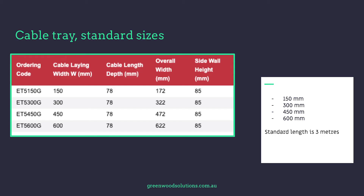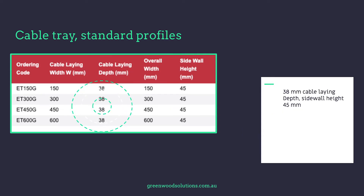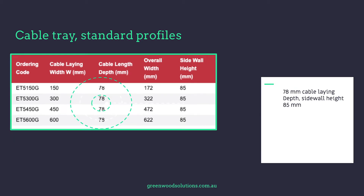Cable ladder, cable tray, and cable mesh come in standard widths: 150mm, 300mm, 450mm, and 600mm, and also in different sidewall heights. For instance, if you're using an AC cable you'd use a higher sidewall height than for DC cable. Sidewall heights come in 45mm, 50mm, and 85mm.